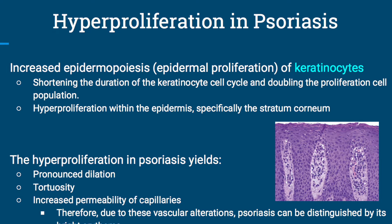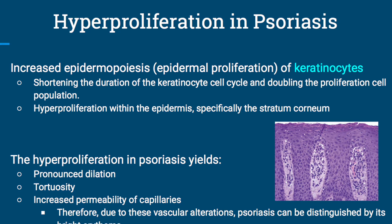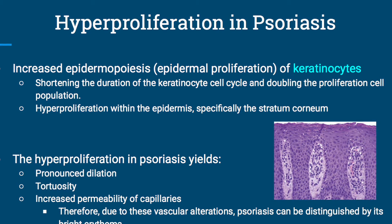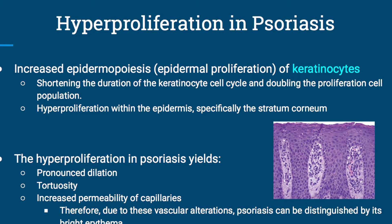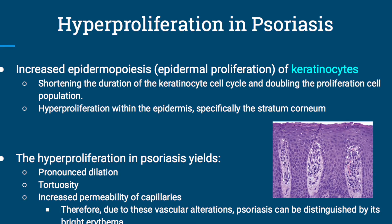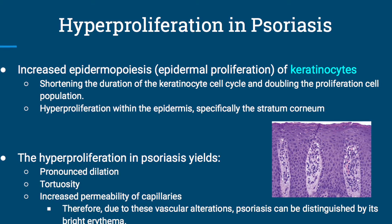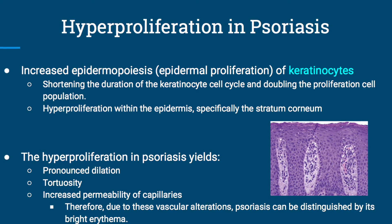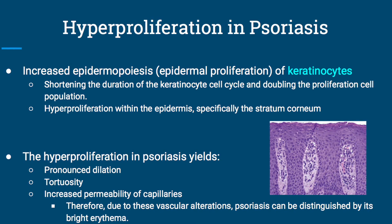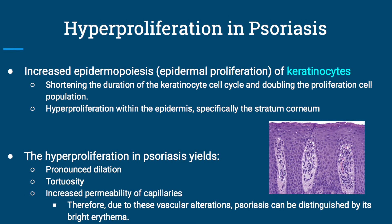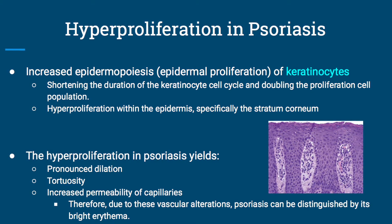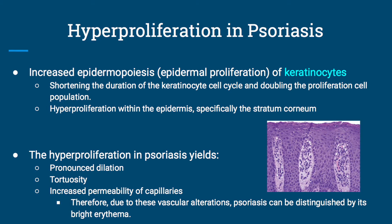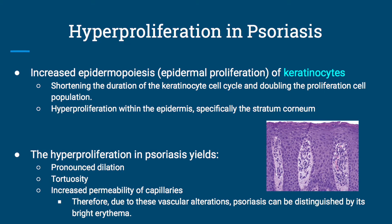Now I'm going to talk about hyperproliferation in psoriasis. It is increased epidermal proliferation, specifically of the keratinocytes. These keratinocytes are located within the stratum corneum, which is the most superficial layer of your epidermis. With people that have psoriasis, because it's hyperproliferation, they can have up to 30 times more keratinocytes per unit of skin. With the cell cycle, you have a shortening in the duration of the actual keratinocyte cell cycle, and a doubling of the proliferation cell phase.